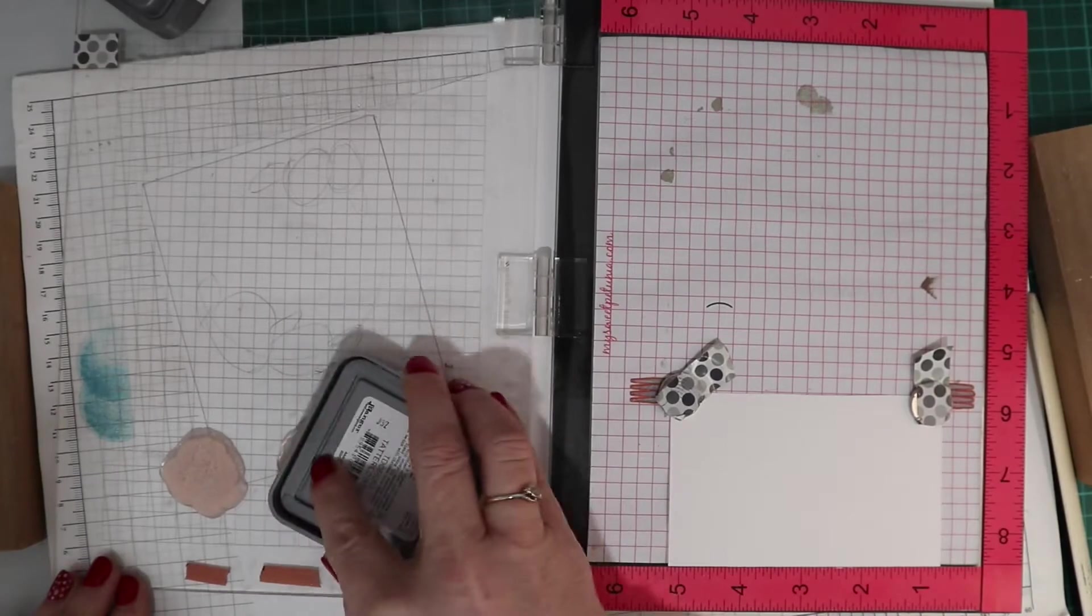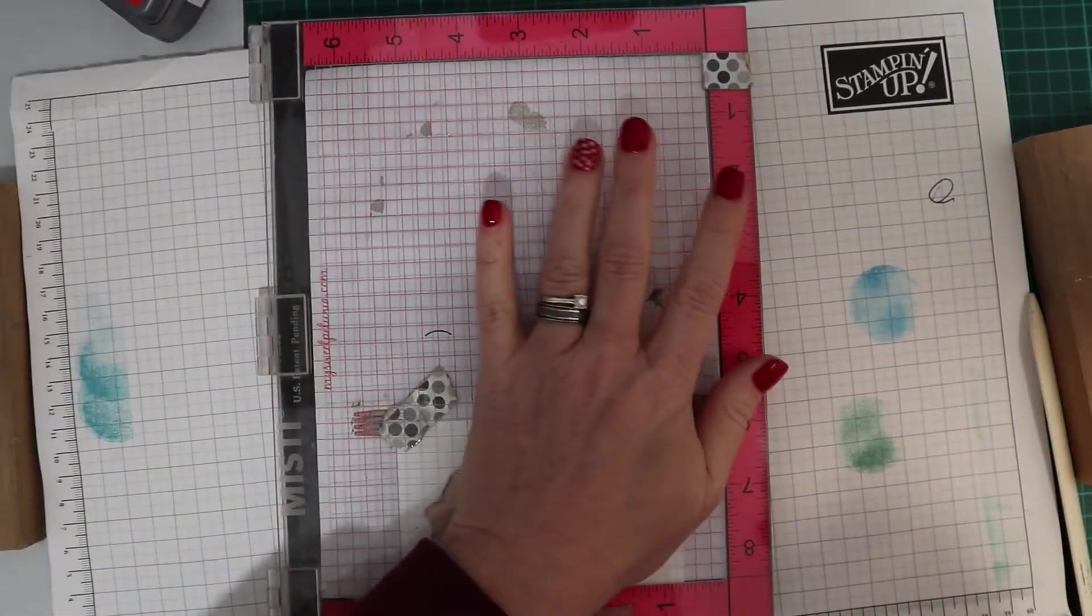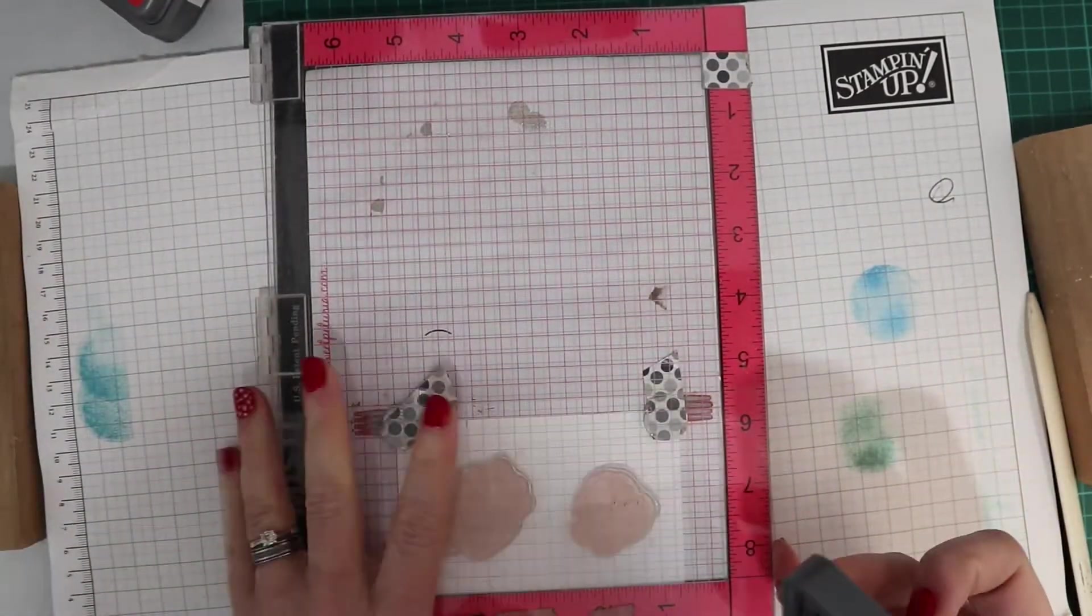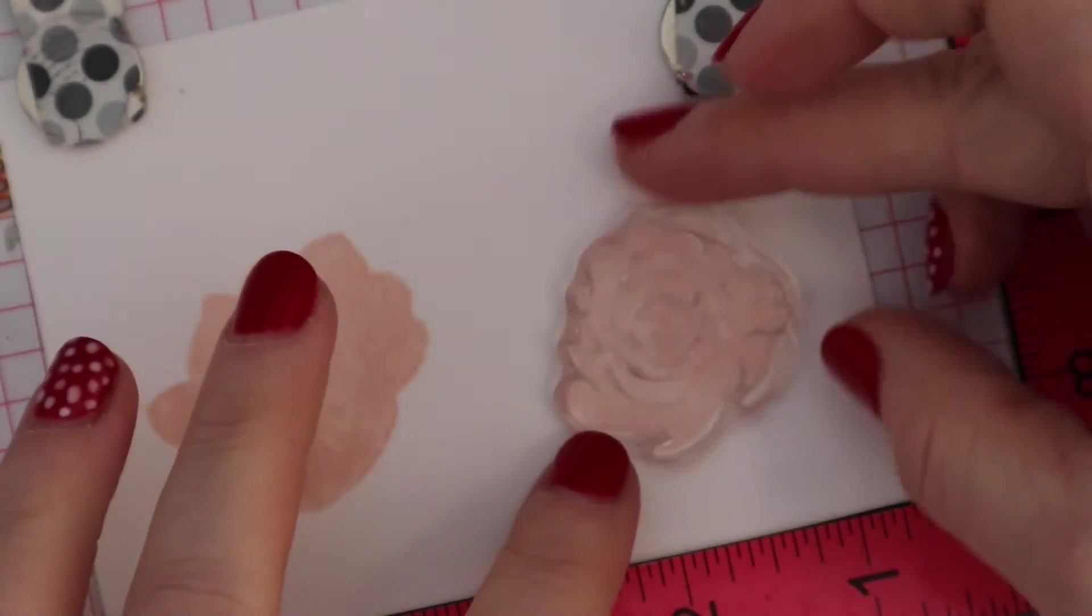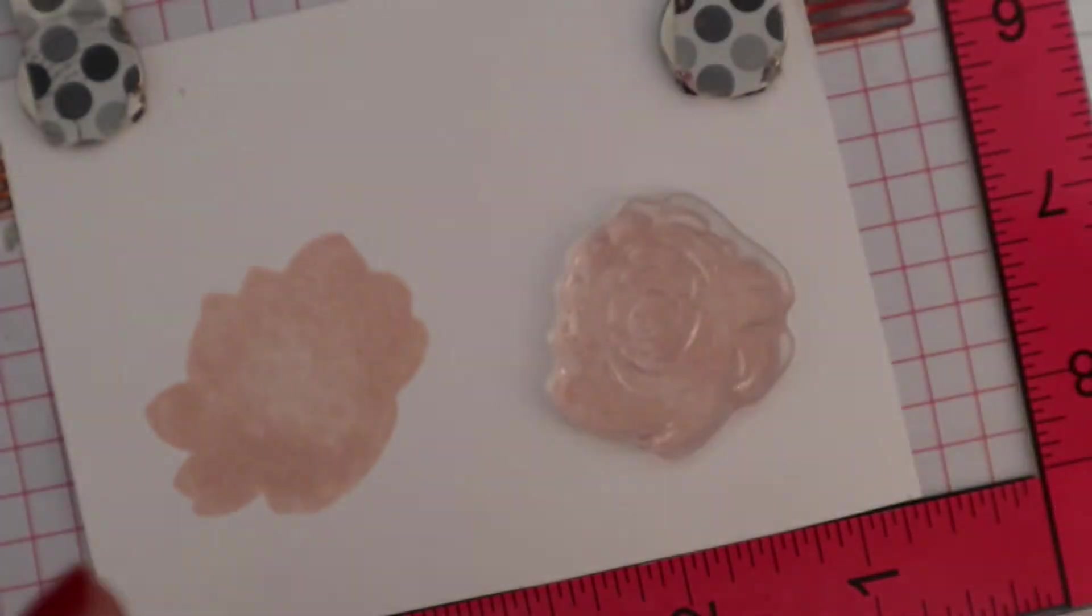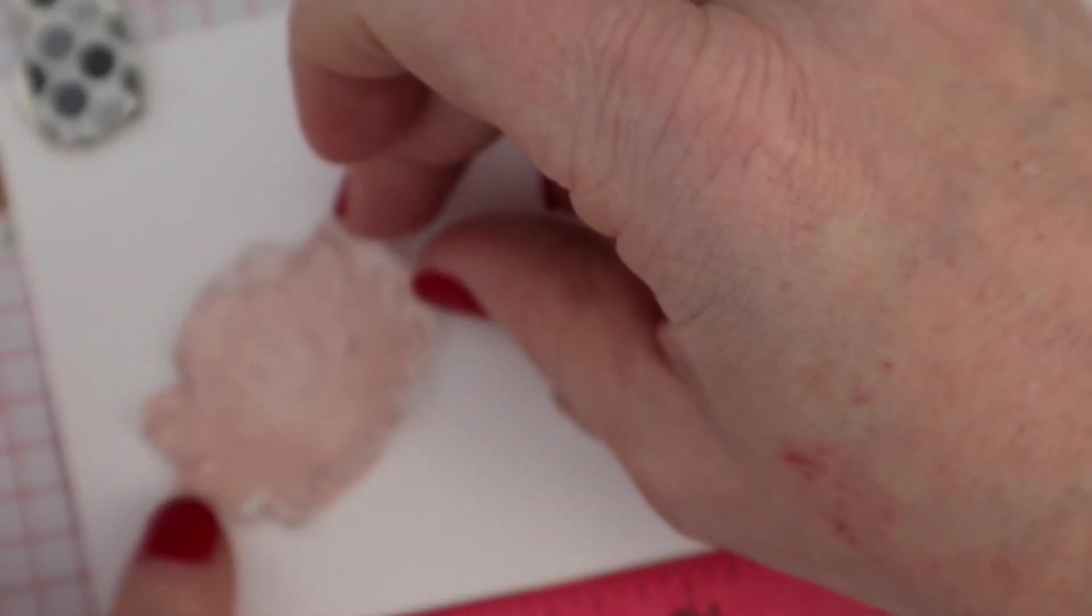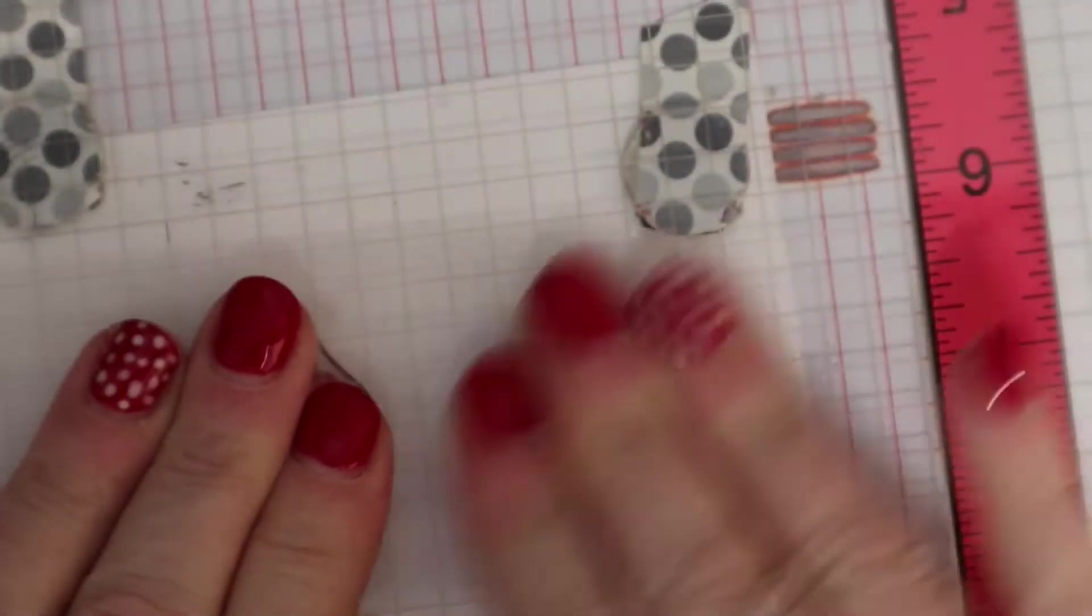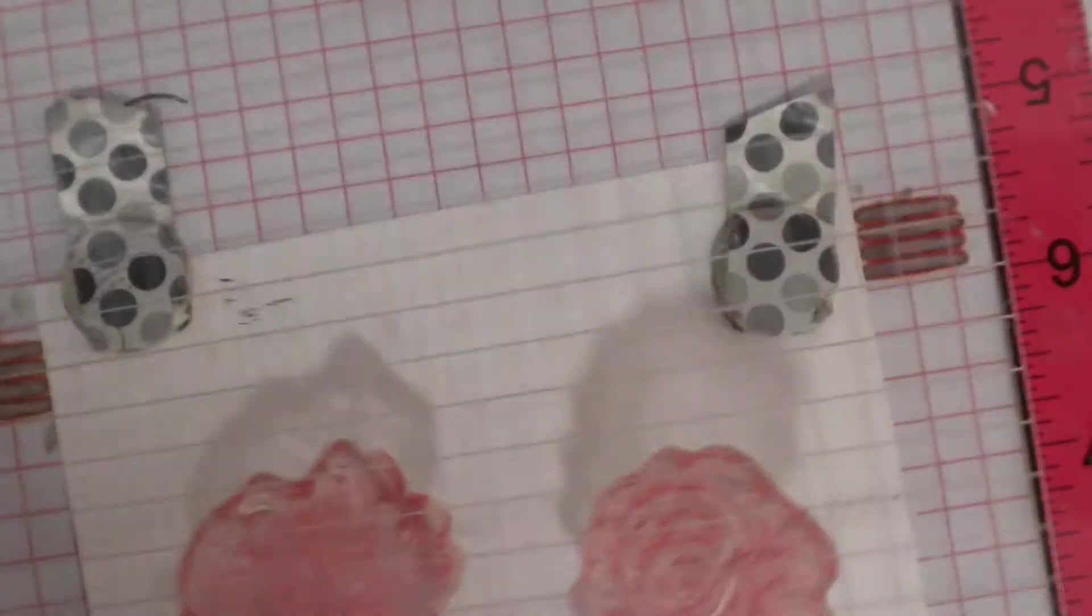Back with the distress oxides, I'm using three tones because these are a three stamp image. You start off with your base layer in my lightest pink of choice which is tattered rose. Then you have the second stamp which gives you a bit more detail, the petals of the roses, and I'm doing this one in worn lipstick.